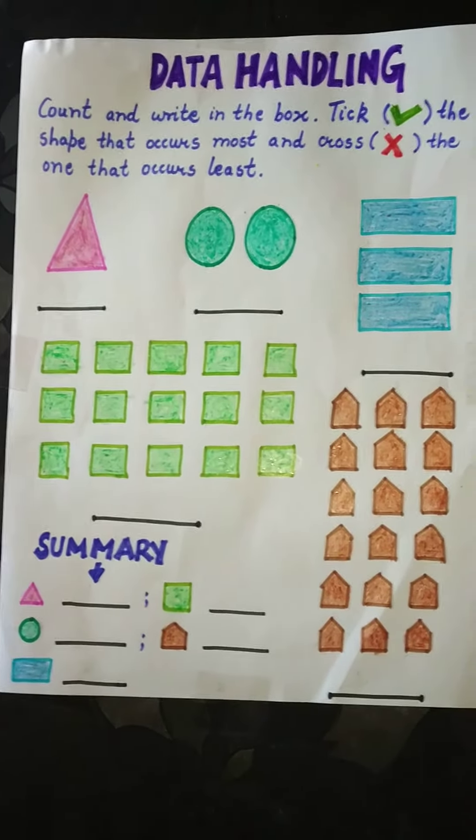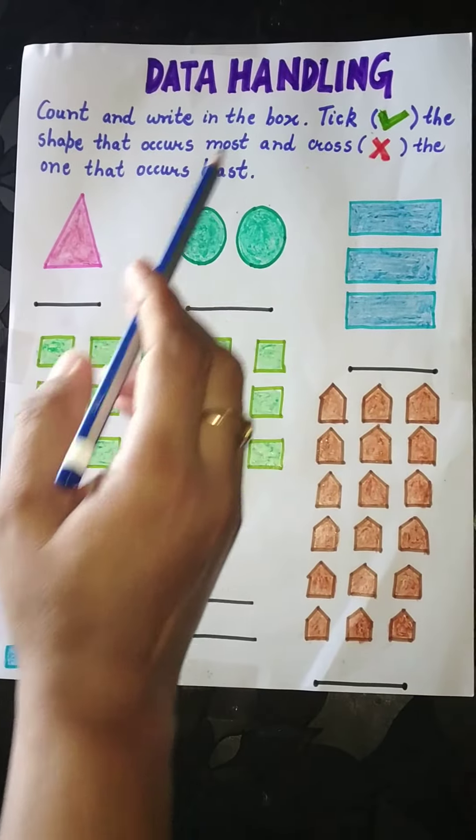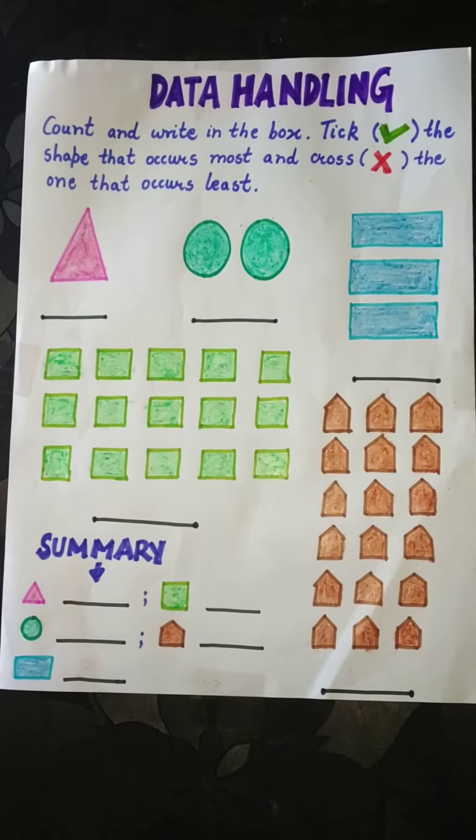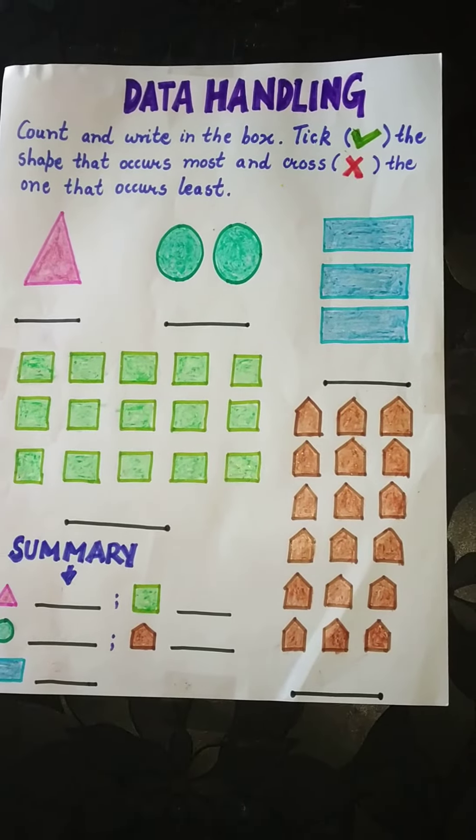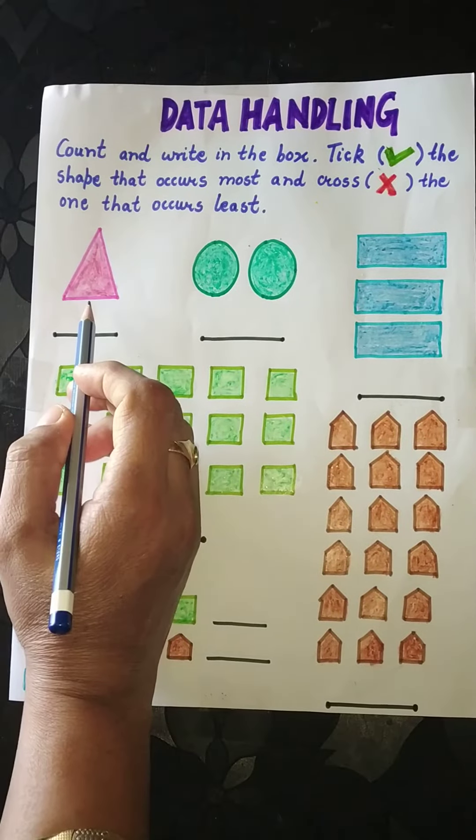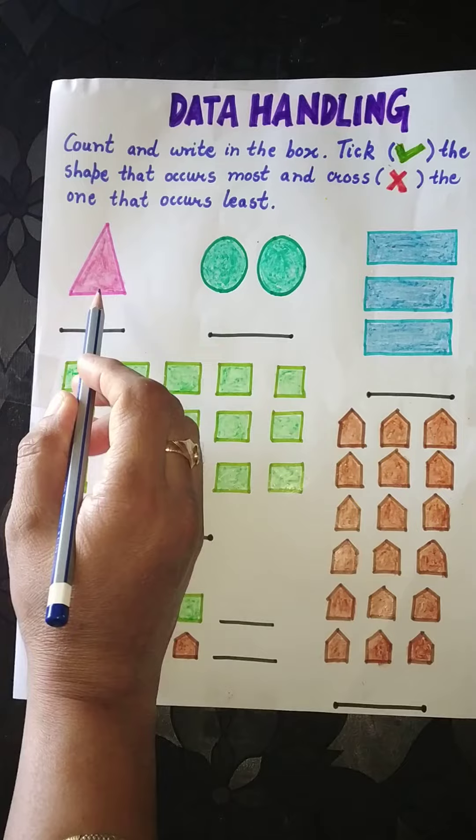Now see the question: count and write in the box. Children, here are some shapes given. We have to count them and write the number in the box. See the first one? This is a shape of triangle. Children, tell me how many triangles are present here? One.